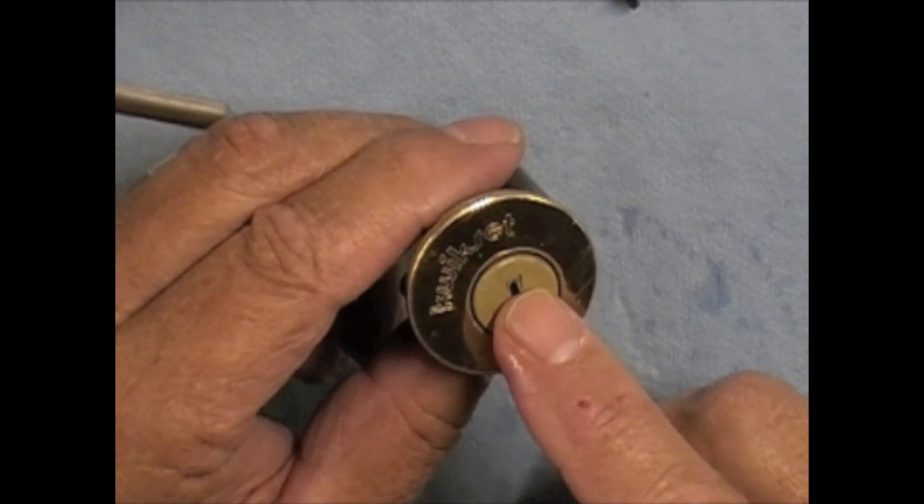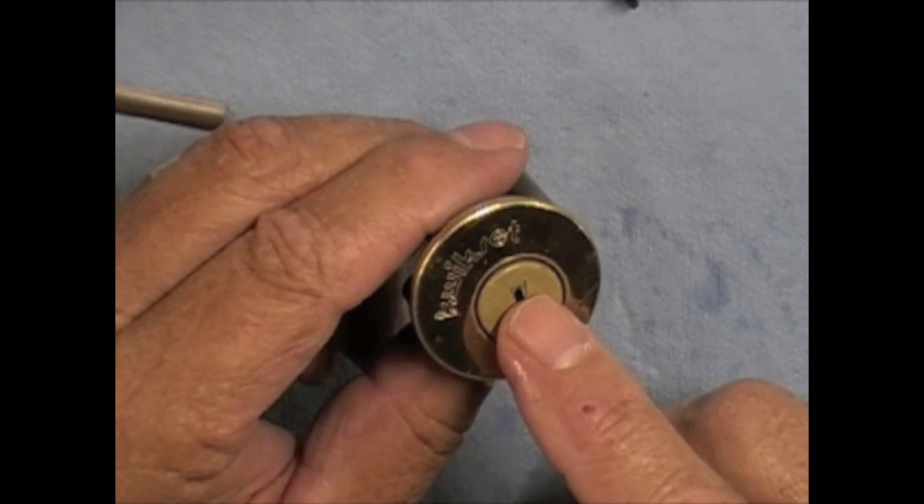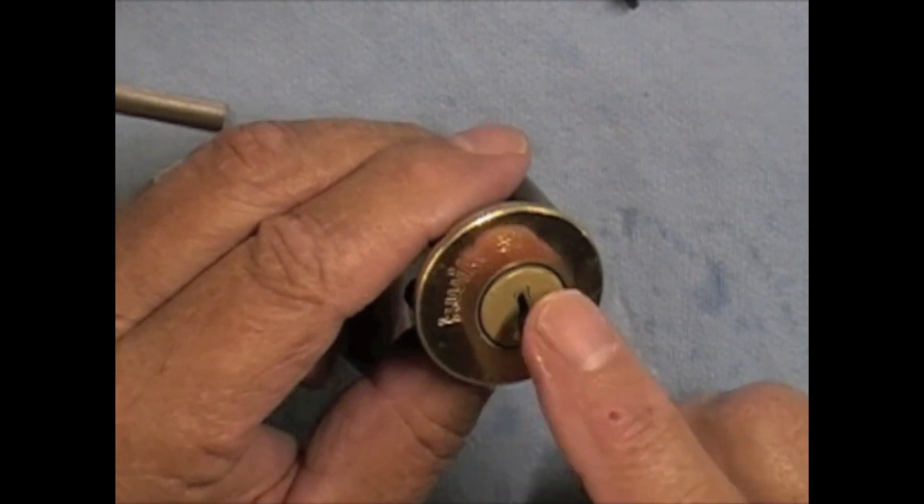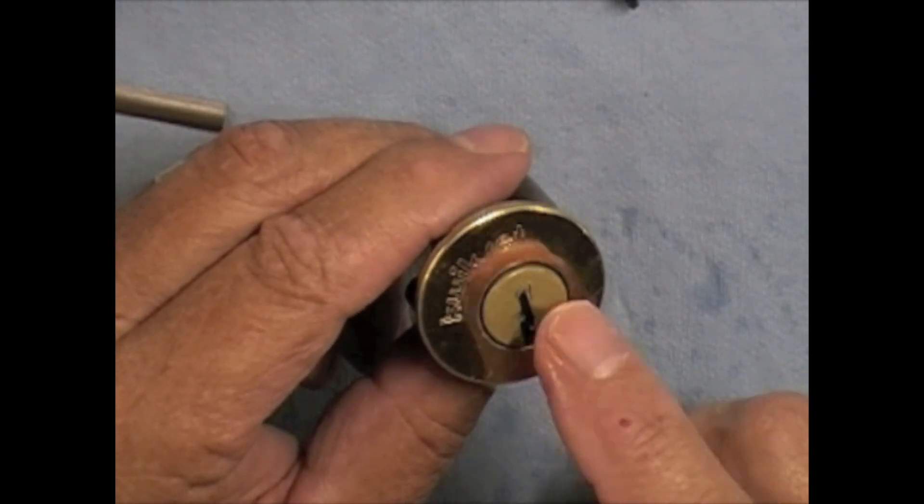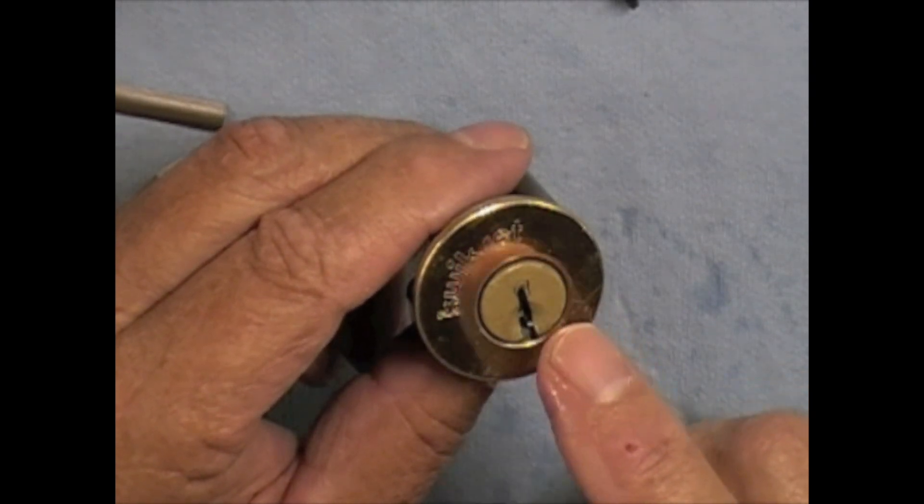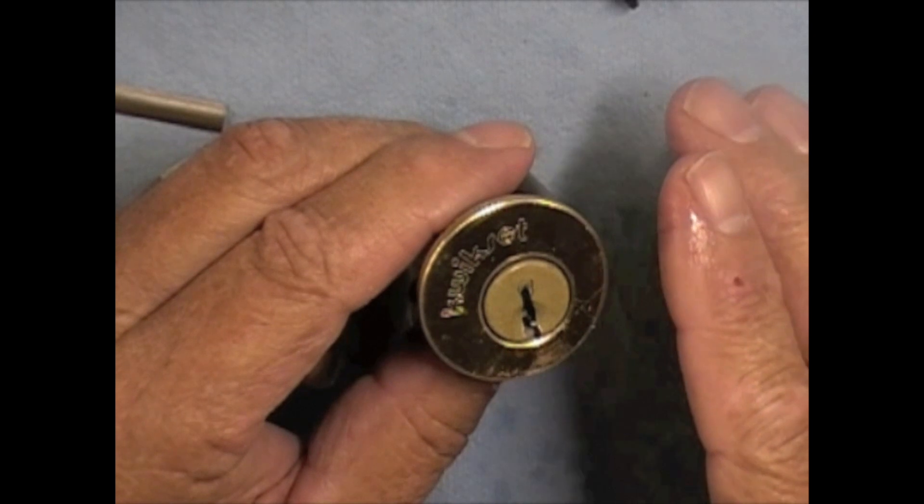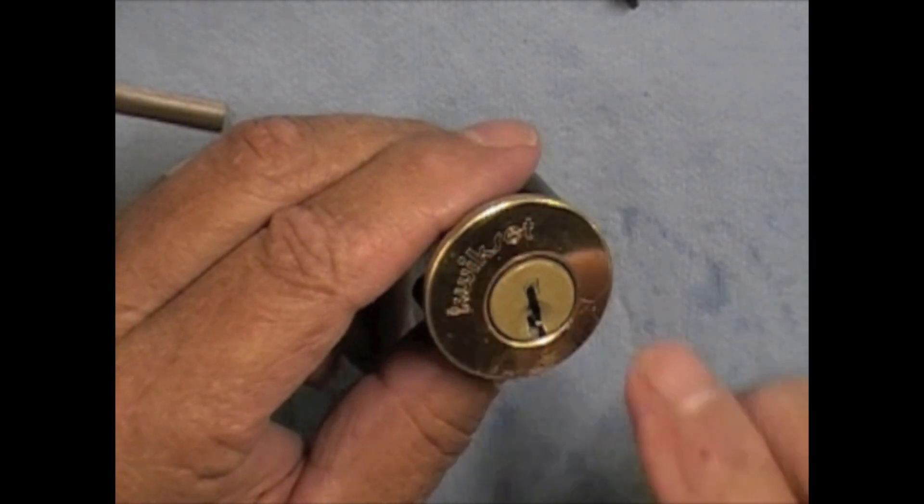Now we want to keep the lock like it is. We want to make a key for the pins that are in here. So we don't want to drop the pins. That's probably the most important thing in doing this. If the customer wants you to make a key for the existing lock and not change that.